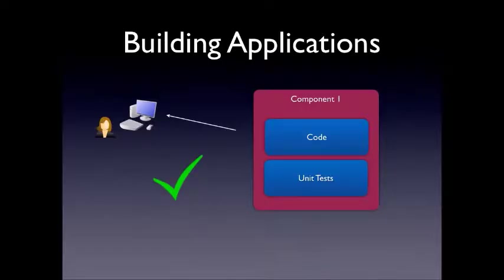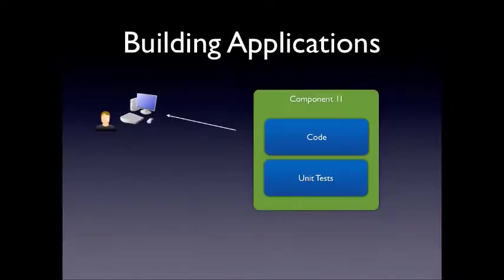They write their code, run their unit tests, and it's all fine. The same happens with the person working on component 2. The problem, however, is that software systems aren't composed of individual and isolated components — they are composed of components that normally have to work together.